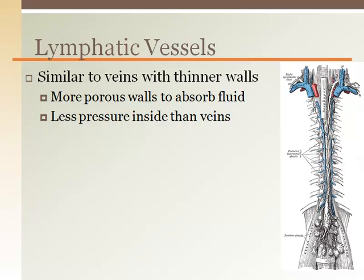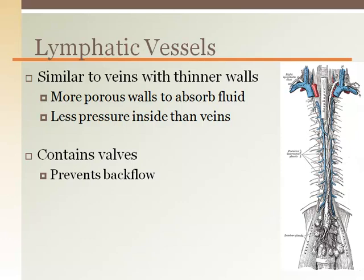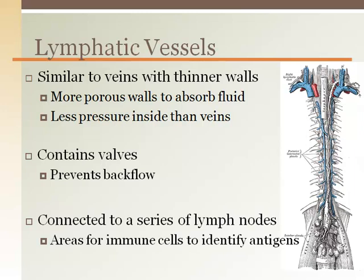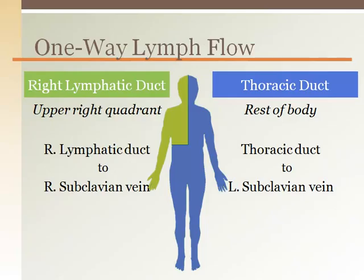Along the lymphatic vessel network are a series of lymph nodes to provide locations for leukocytes to collect and inspect the lymphatic fluid for any antigens. This makes even more sense when you consider an area of damage like a splinter entering the skin. Lymphatic fluid, part of the swelling in the local area, is drained through lymphatic vessels. Before returning that fluid to the blood, it needs to be inspected for any antigens that may have entered the body with the splinter.